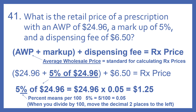If we add the AWP and the markup, then add the dispensing fee, that gives us our prescription price. So our AWP is $24.96, and we're going to add 5% of $24.96 to that number.